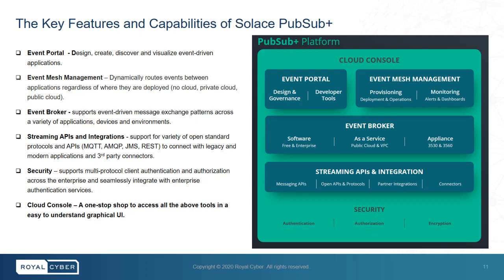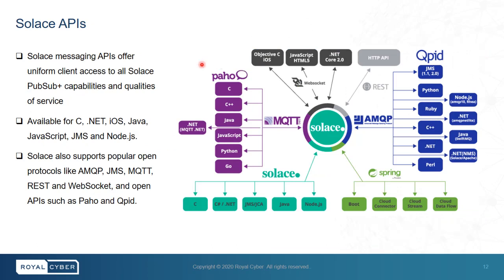Finally, it offers a cloud console. All of the above features and capabilities can be accessed through a single cloud console with a single login, making it easy for architects, developers, and other users to work and collaborate to drive the enterprise EDA mission forward. Solace provides enterprise messaging APIs enabling you to develop applications for use with Solace PubSub+, with sample applications, release notes, and developer documentation. These APIs are available in languages like C, .NET, iOS, Java, JavaScript, JMS, and Node.js, and it supports open protocols like AMQP, JMS, MQTT, and open APIs such as PAHO and QPID.